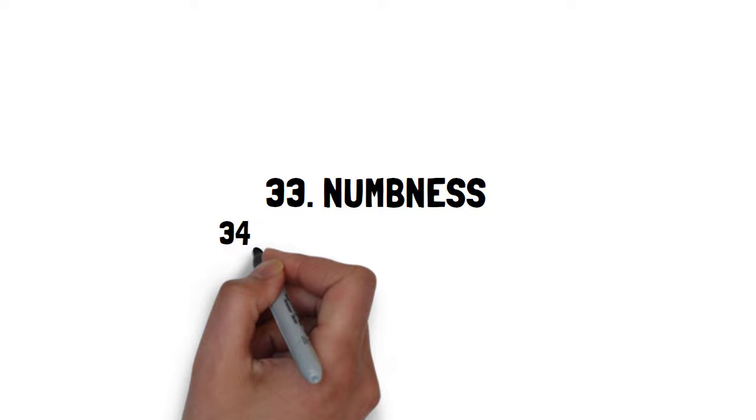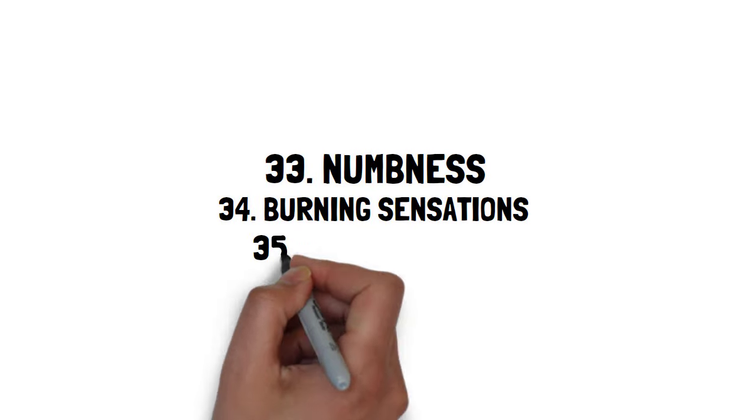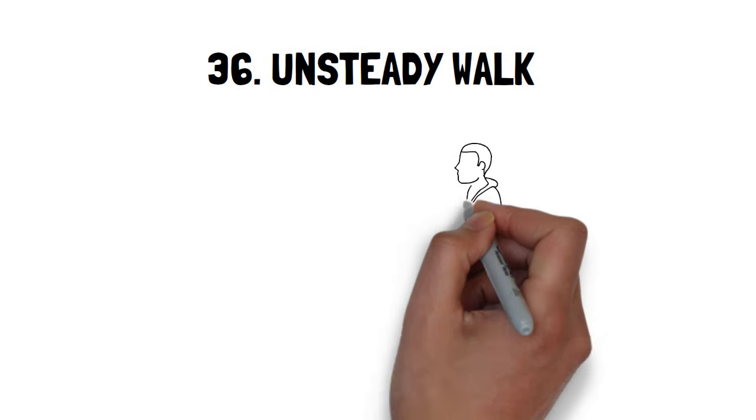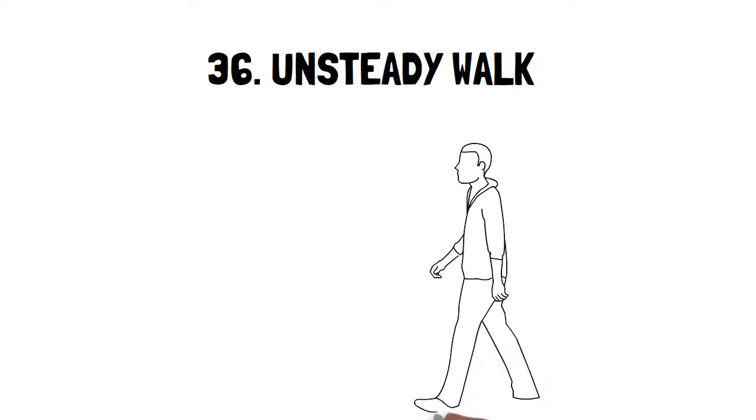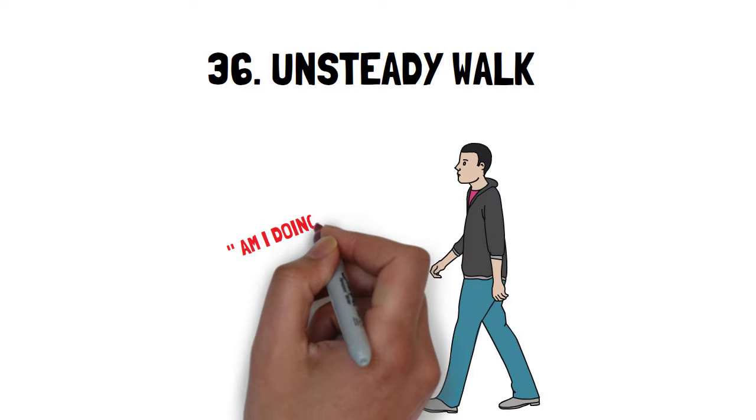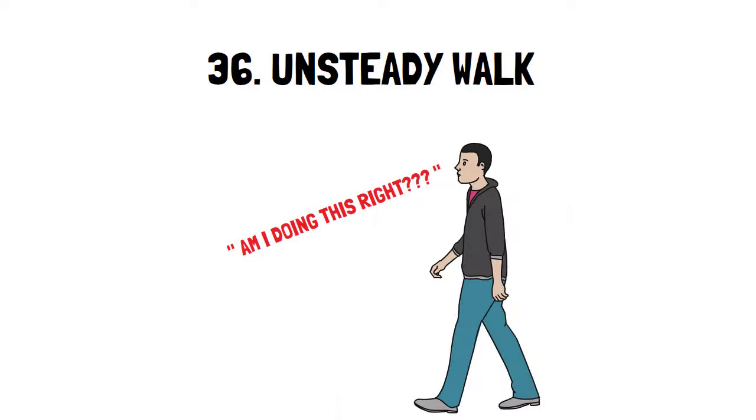Thirty-three, numbness. Thirty-four, burning sensations. Thirty-five, IBS symptoms. Thirty-six, unsteady walk. There were times I would genuinely question my ability to walk or start to wonder if I'm walking right. I would so overthink walking that I no longer knew how to do it.